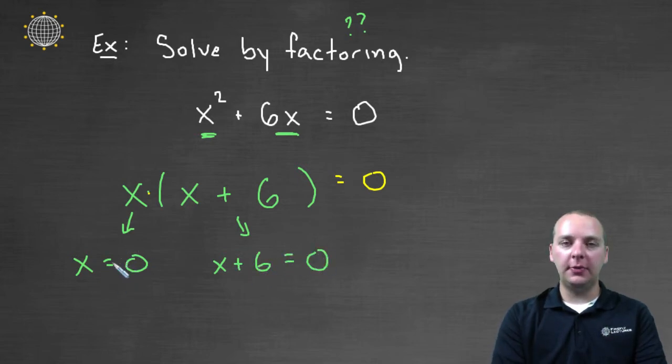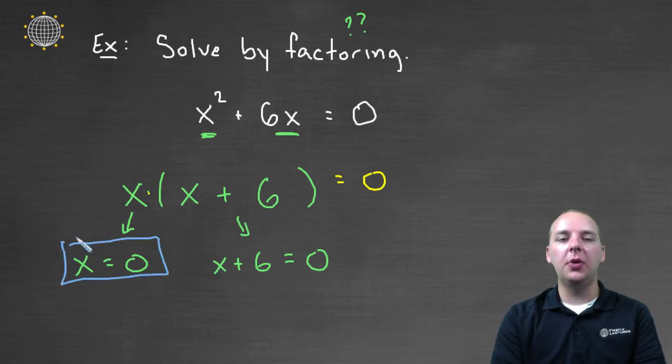Now this first equation here actually throws students off as well. Here we have x = 0, and there's nothing to do. We're done. x = 0 would be one of the solutions to the quadratic equation.